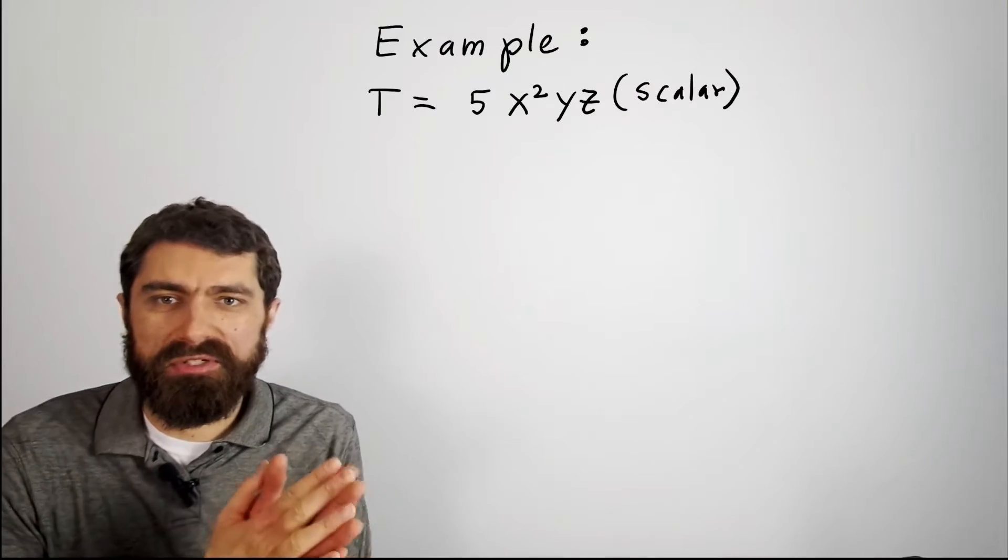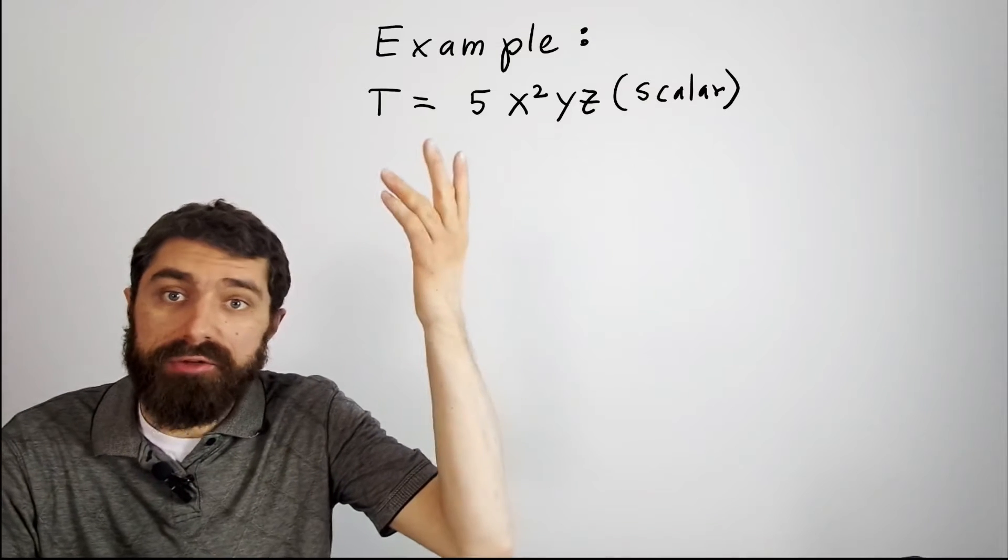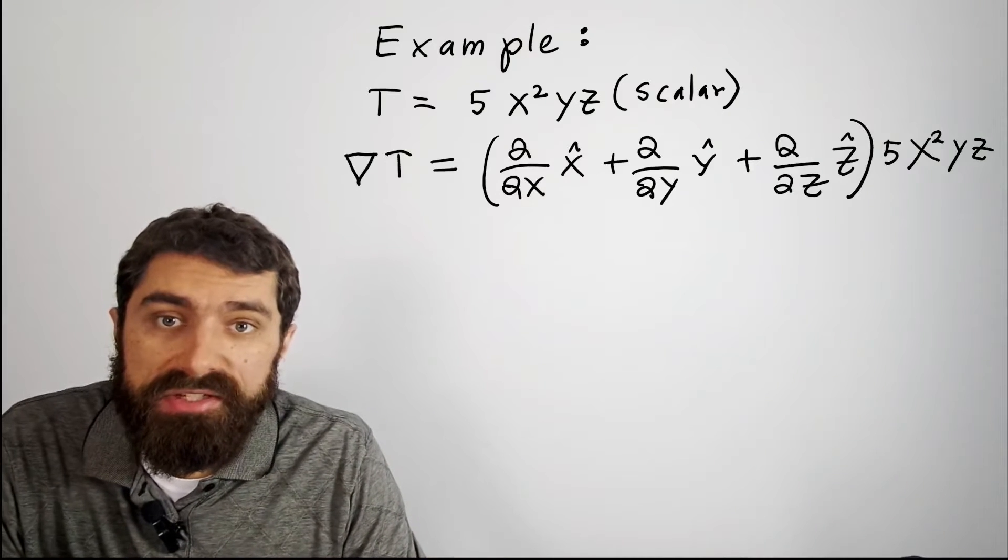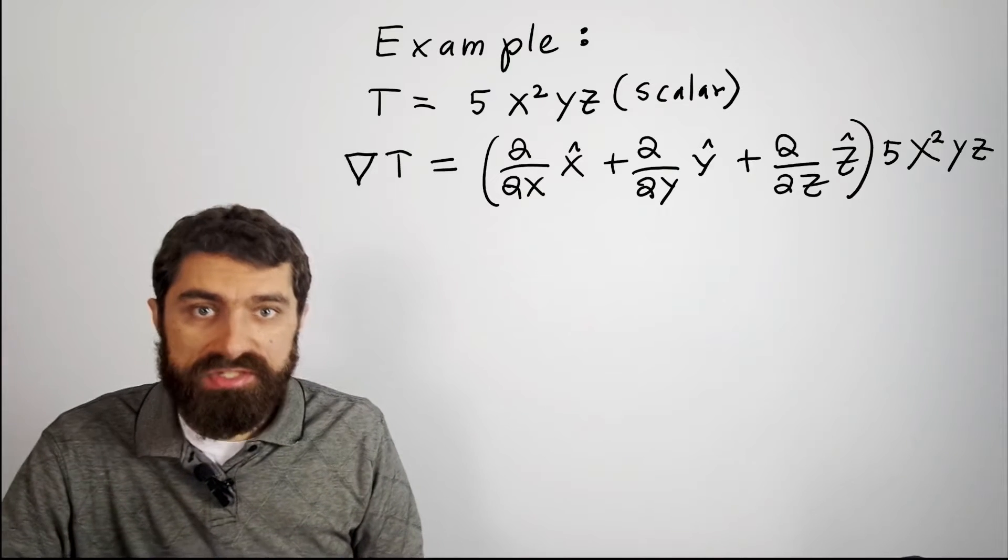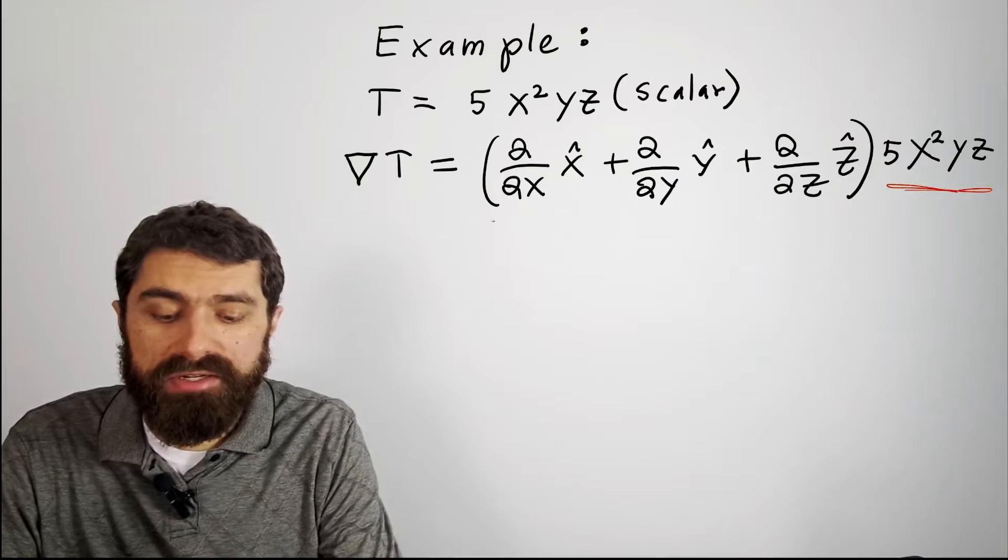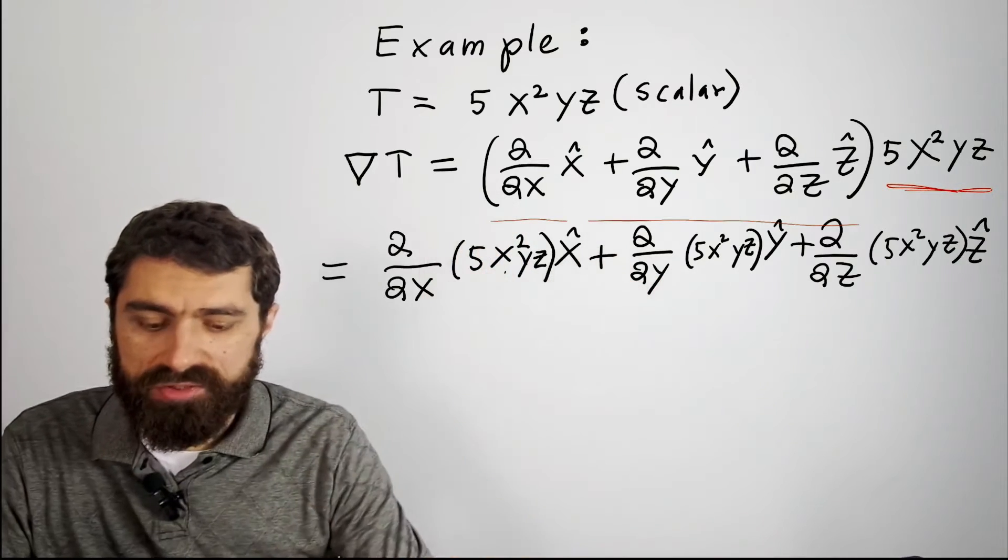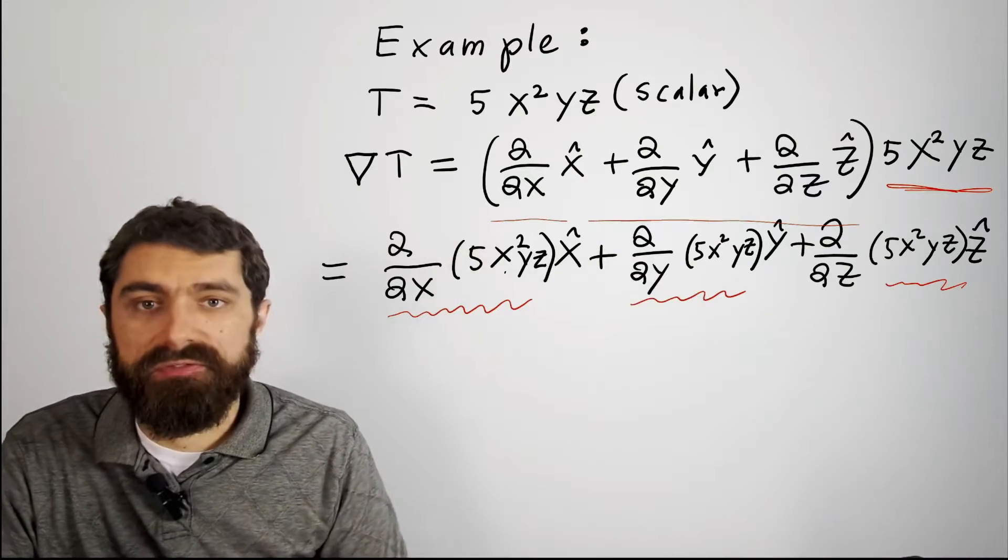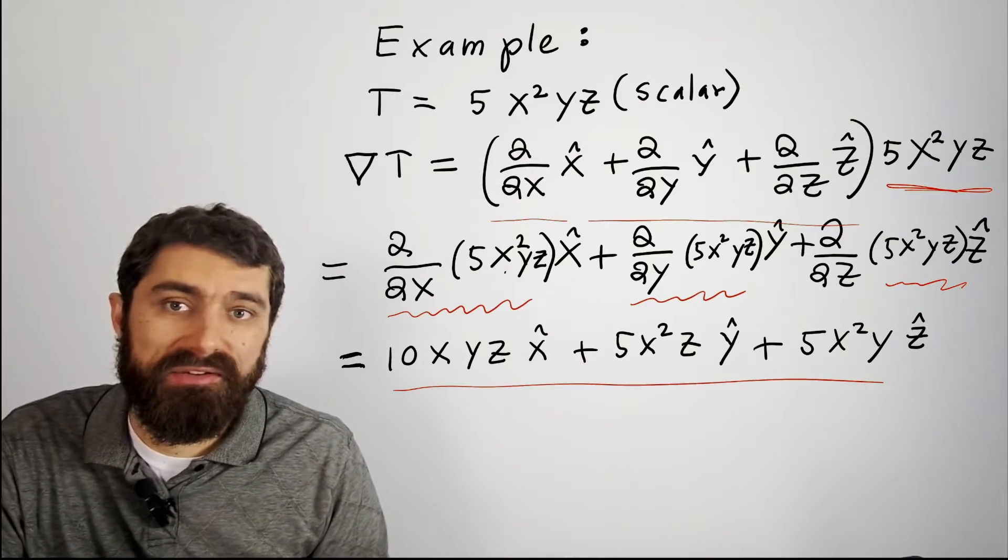Real quick, let me give you a little example of how this actually works here. So let's suppose you have a scalar function here, T = 5x²yz, a function of space x, y, and z. And we want to take del T here. Basically, you just take your T value and you would distribute it across this operator here. So basically distribute it, and so then you just take all these partial derivatives here. And if you work that out and add them all together, you should get this.